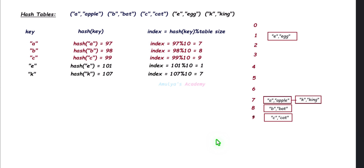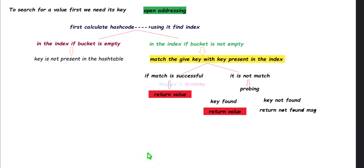Next, searching a key-value pair in a hash table where collision is handled using the open addressing method. We need a key, then calculate the hash code using the hash function to find the index. Check that index: if the slot is empty, return the not-found message. If it is not empty, match the given key with the key at that index. If the match is successful, return the value. If unsuccessful, use probing to search other slots. If the key is found, return the value; if not found after searching the entire table or an empty slot is encountered, return 'key is not found.'